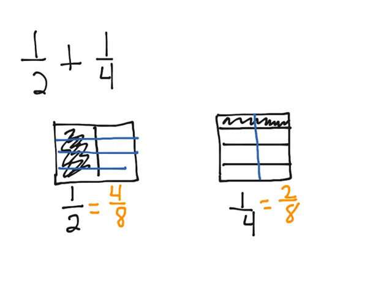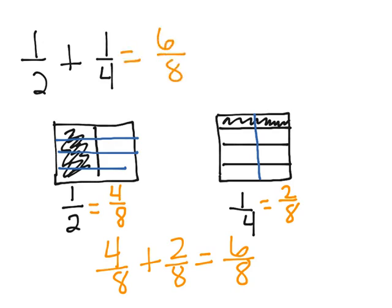Now that we have like units or a common denominator, we can add 4 eighths plus 2 eighths, which is equal to 6 eighths. Therefore, 1 half plus 1 fourth equals 6 eighths.